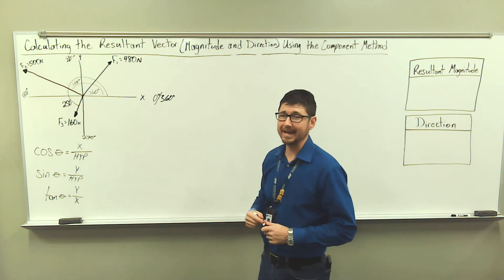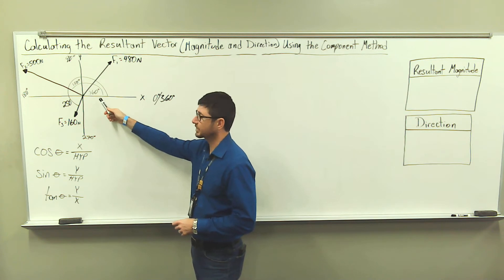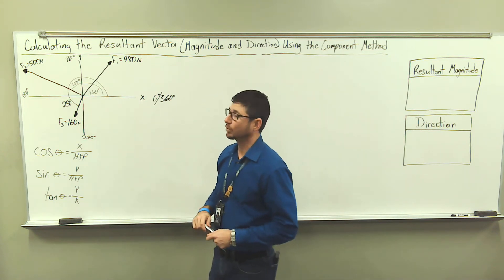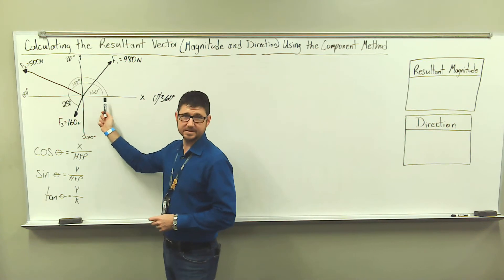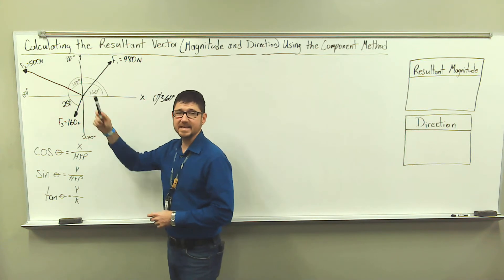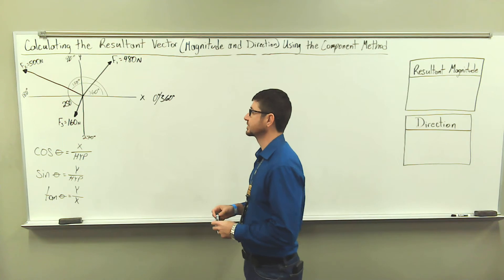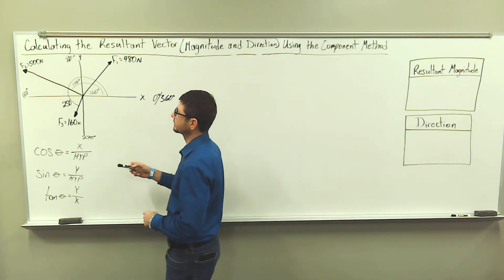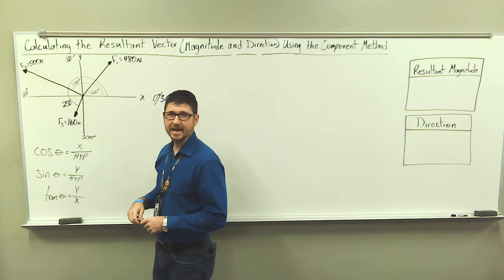Force one is 480 newtons at 60 degrees with respect to the x-axis. Force two is 500 newtons with respect to the x-axis in a positive x direction and it is acting at 150 degrees. And force three is 160 newtons at 250 degrees with respect to the x-axis.